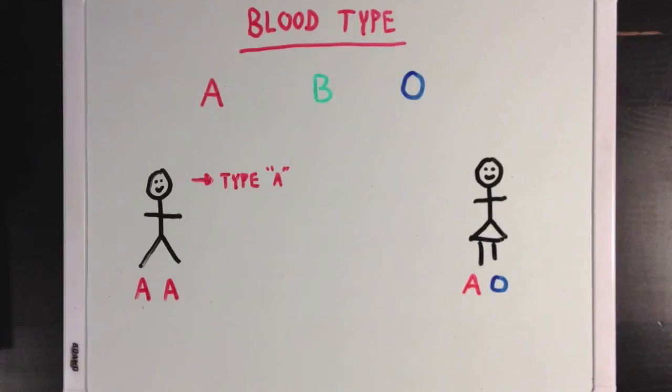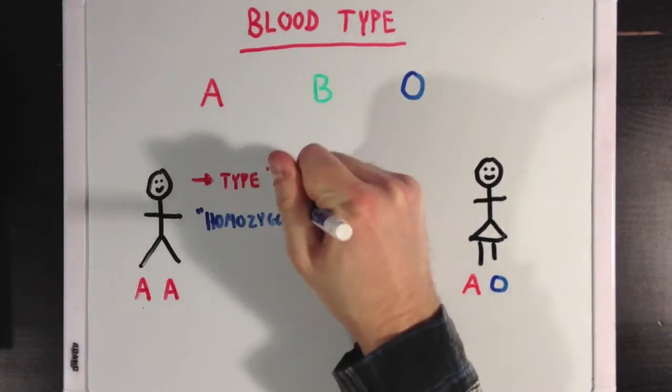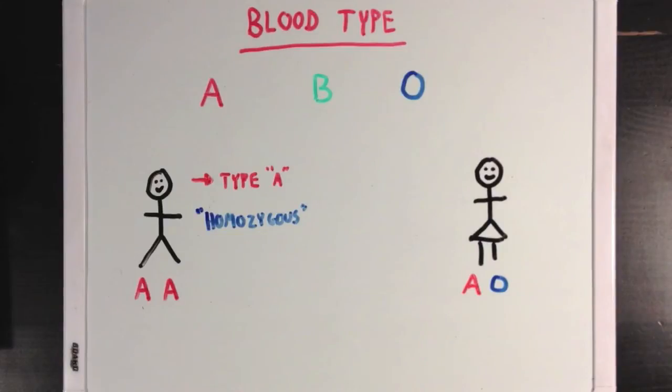So now I'm going to introduce a couple new terms to you. And the first is that since the guy has two alleles that code for the same thing, both code for blood type A, then we say that this guy is homozygous. And homo means the two alleles are the same. And zygous refers to the mixture of DNA that he got from his parents. So someone who is homozygous got the same allele from both parents.